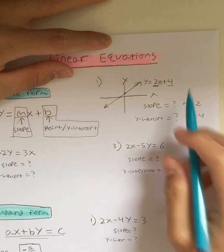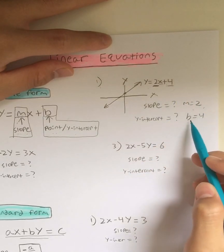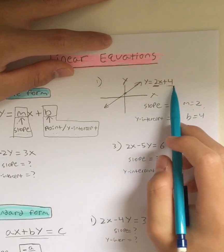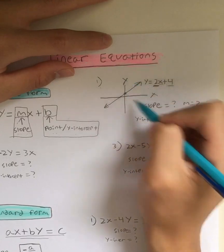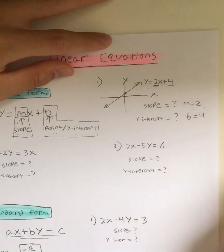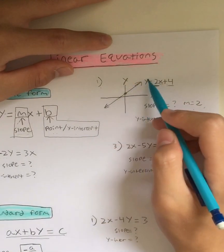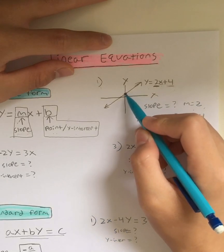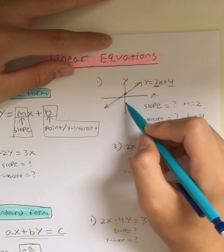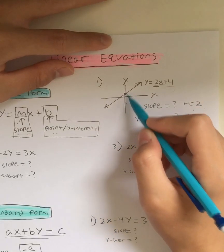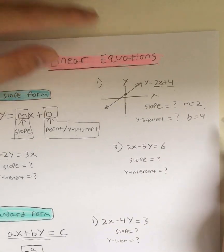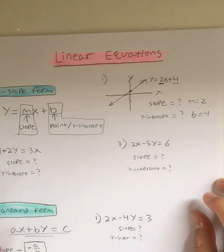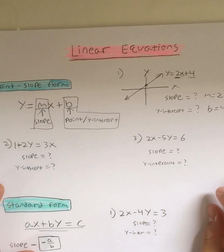Therefore, in this line the slope is 2, and the y-intercept — where it touches the y-axis — is 4. This is reasonable because if you look at the line, you can tell that it's going to be positive, not negative. So 4 is a reasonable answer. Now let's move on to example 2.